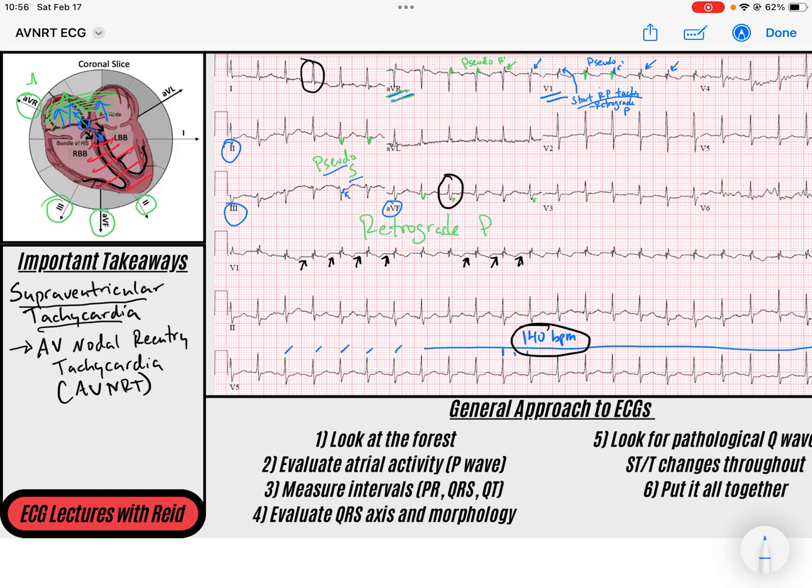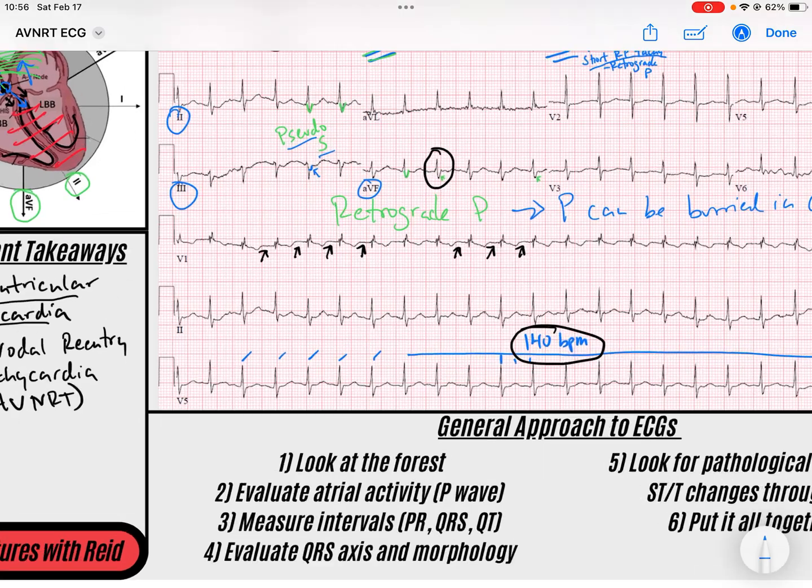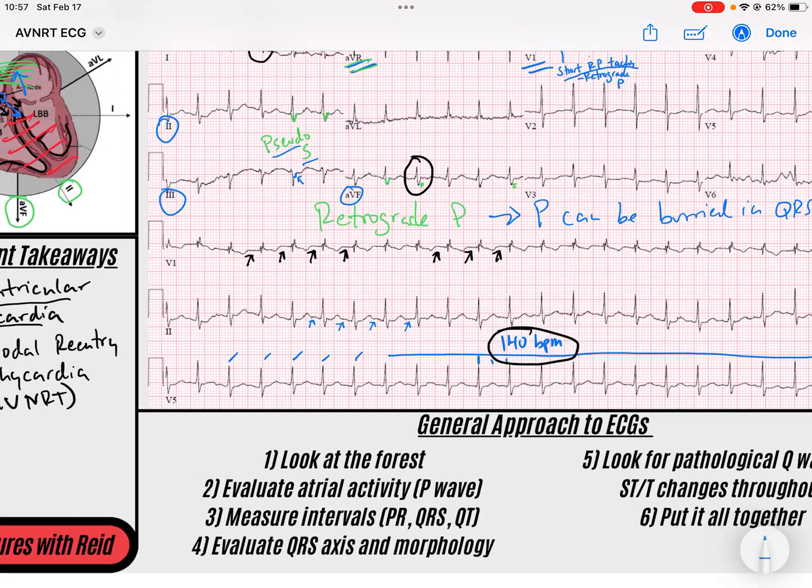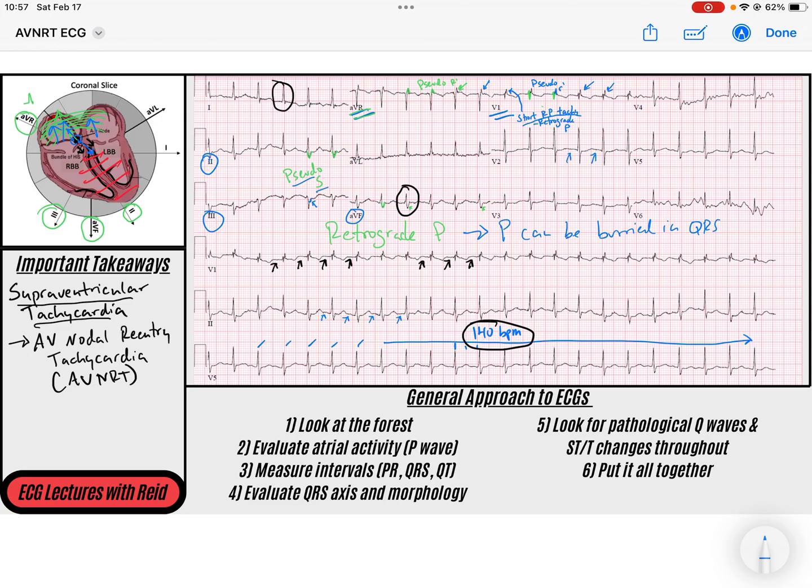Now, you're not always going to see these pseudo waves because sometimes that fast pathway bringing the signal all the way back into the atria can happen so fast that it's buried in the QRS. So it's not all the time. Sometimes the P can be buried in the QRS. But notice that it's going to be a very regular narrow complex tachycardia. There are not going to be atrial P waves before my QRSs. Notice there's no P waves before my QRSs in a normal fashion. And it's going to be quite rapid like we see here.